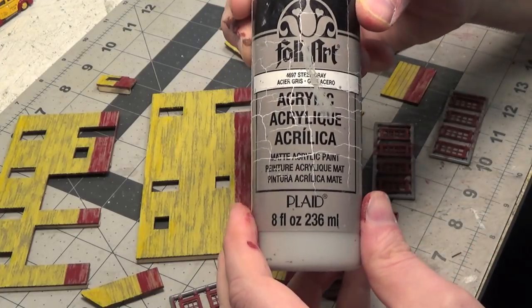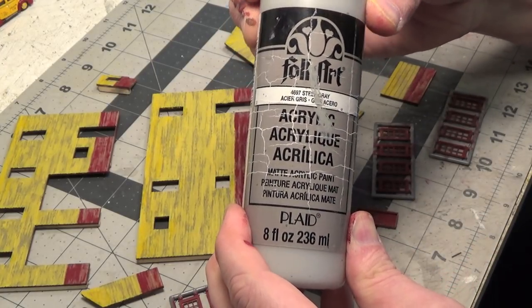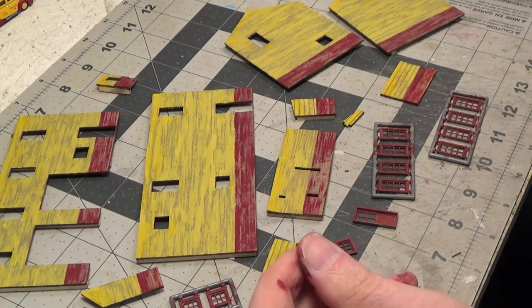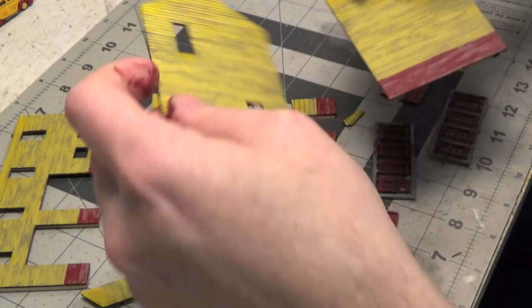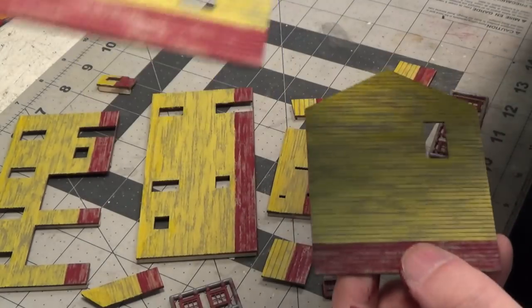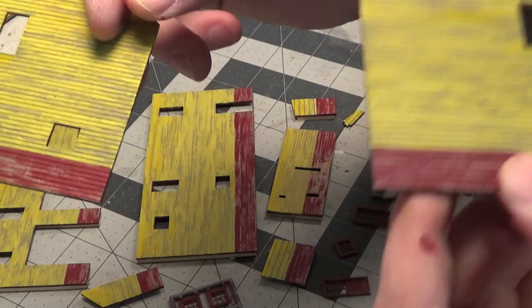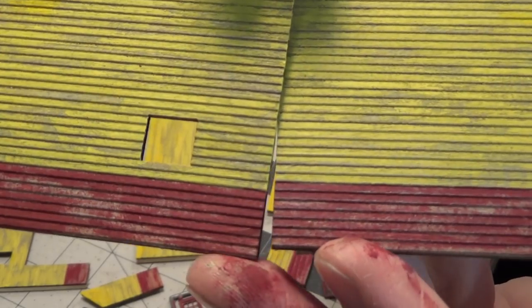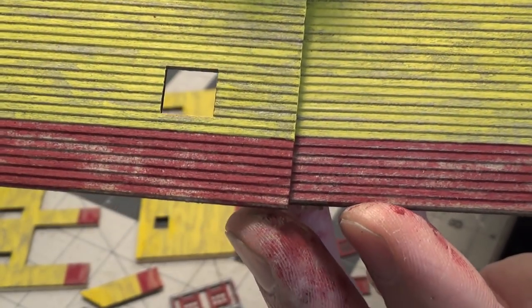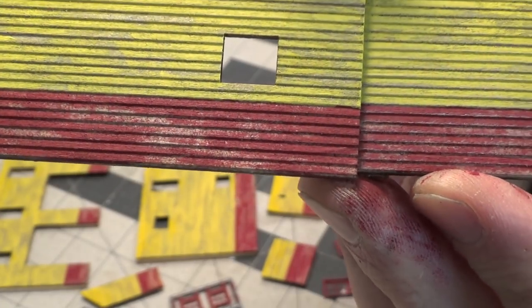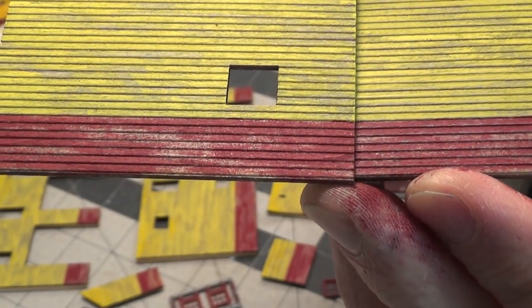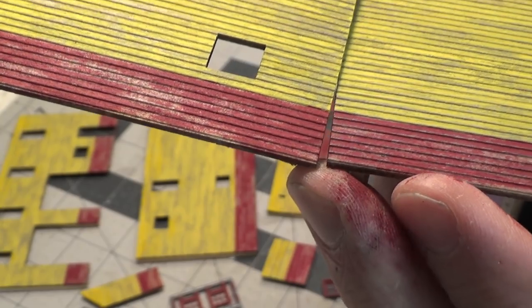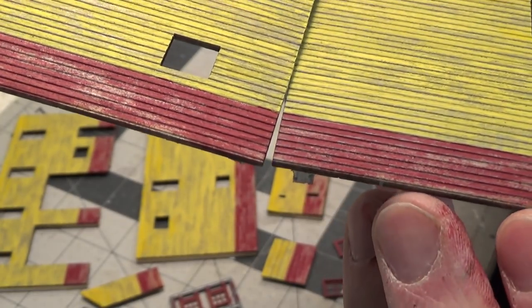So now I am lightly dry brushing over the walls with light gray. It's actually called Steel Gray by Folk Art. So this wall here is not done. And this wall here is done. I don't know if you can see the difference. Possibly in the red you'll be able to tell. It gives it even more of a chipped paint look. You're just lightly going over the raised part of the clapboard.